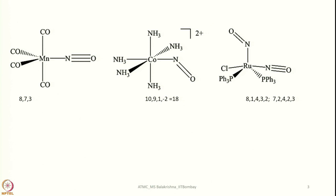Let us go to one more example. Recall Mn(CO)5 — it exists as a dimer having this kind of composition. The reason why is answered by this example: we have 4 carbonyls, giving 8 electrons, and Mn is 3d5 4s2 giving 7 electrons. Then we have NO, which is a 3-electron donor rather than a 2-electron donor like CO. Adding linearly, this gives 18 electrons. Since this satisfies the 18-electron rule, it does not undergo dimerization. So this is an 18-electron complex.